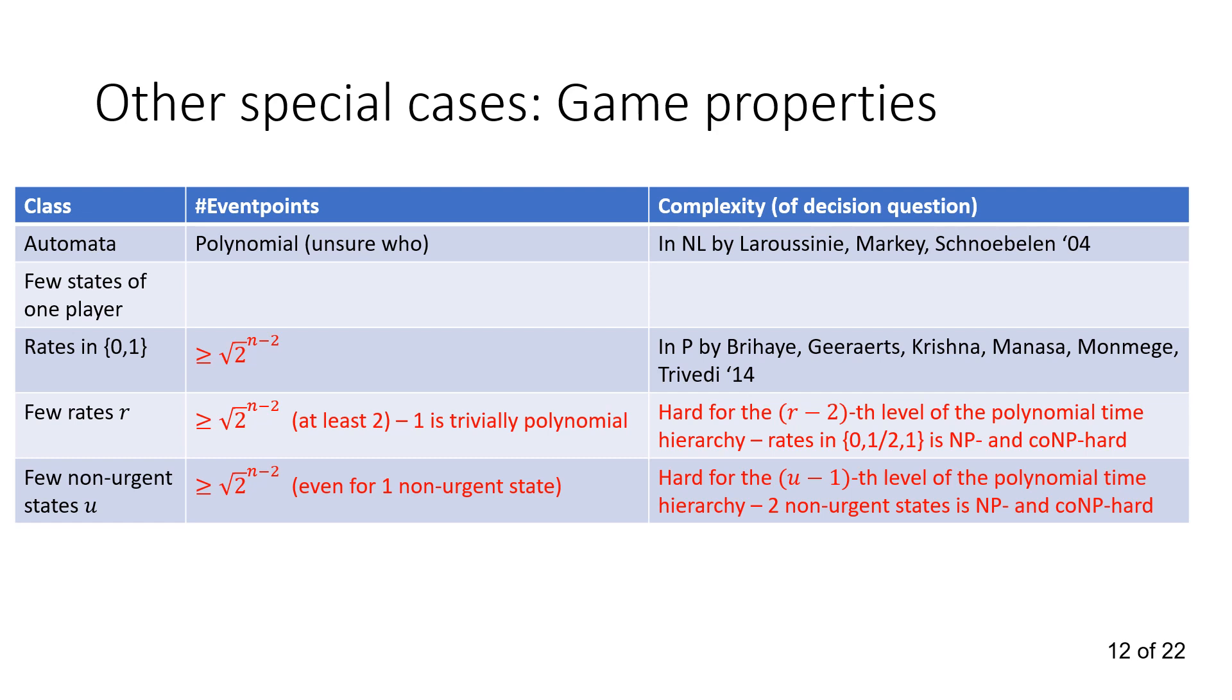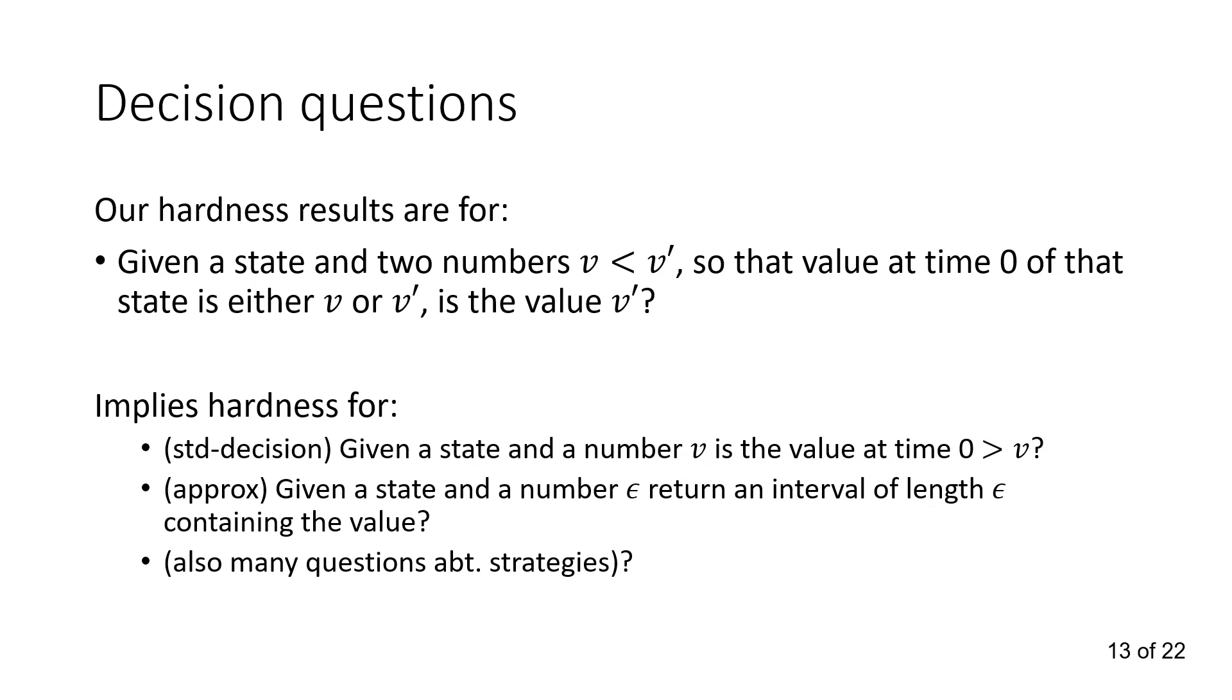So, in all the special cases of game properties, we already have a hard number of event points. And this is already the case if it just has slightly more than the trivial number. So if you just have two weights, that's already an exponential number. If you have just one non-urgent state, that's already an exponential number. And it's basically immediately NP and co-NP-hard. So already with three weights, zero, a half, and one, it's NP and co-NP-hard. And just with two non-urgent states, it's NP and co-NP-hard. And as you add more and more weights and more and more non-urgent states, you increase the level of the polynomial time hierarchy. And the last thing here with fewer states of one player is still an open question.